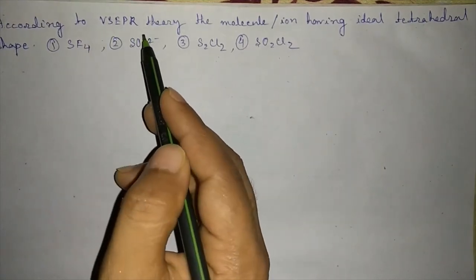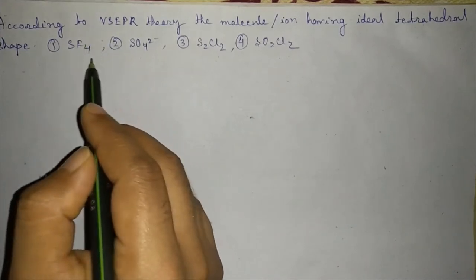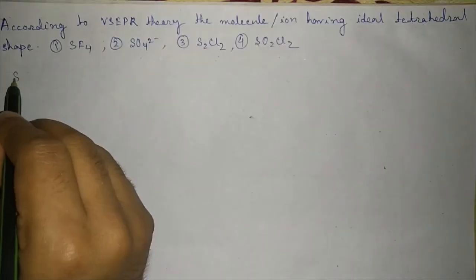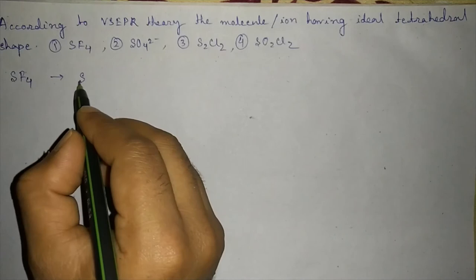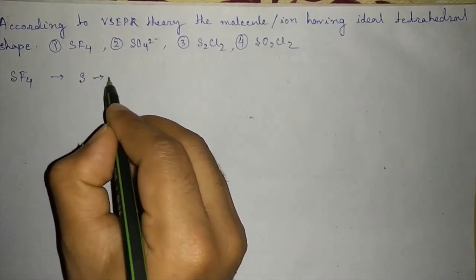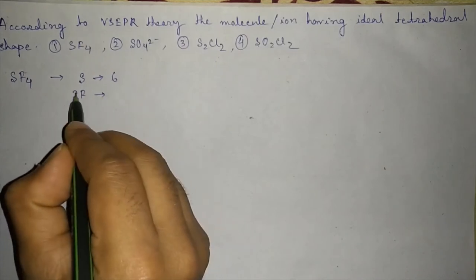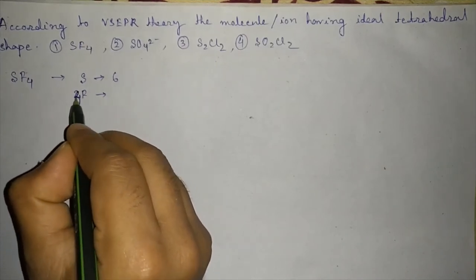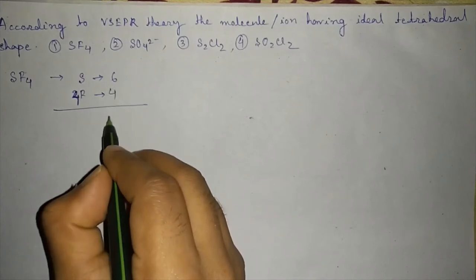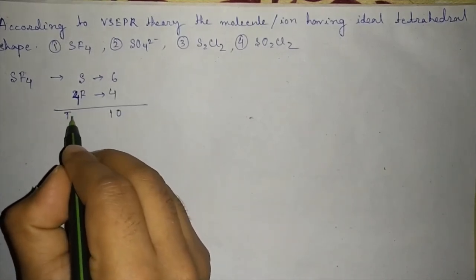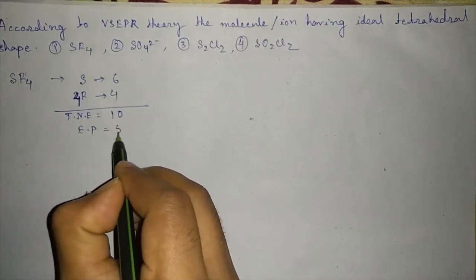We will first take the example SF4. Sulfur has valence shell electrons equal to 6. Four fluorine have 4 electrons, so total 10 electrons. Total number of electrons equal to 10. Electron pairs equal to 5.